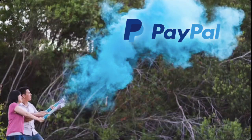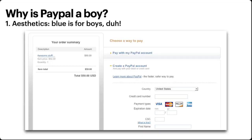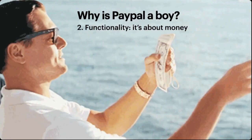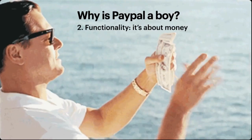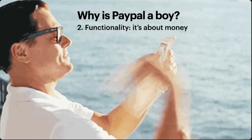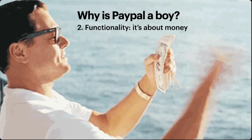An easy example is PayPal. Everyone always seems to say quite quickly that PayPal is a boy. But why does it feel like a boy? Well, there's the obvious aesthetic reasons — blue is for boys. The interface is quite cold and impersonal. It feels very purpose-driven, but also a bit convoluted. It's almost undesigned, definitely not pretty, and it hasn't changed very much since PayPal was founded.